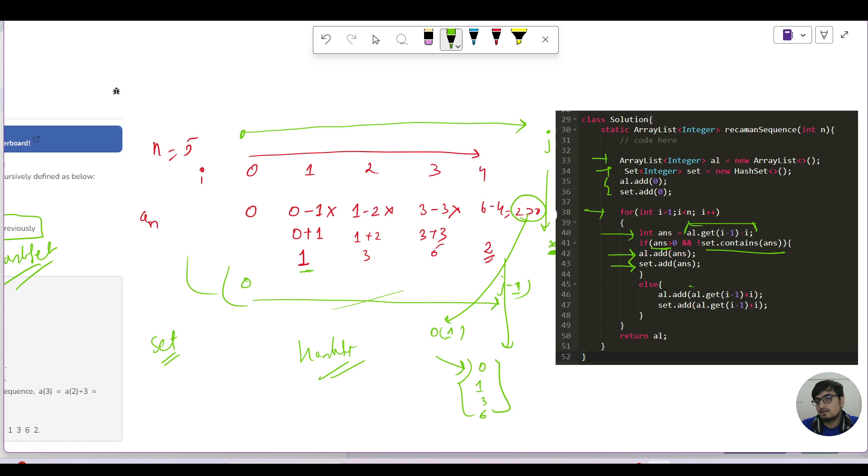Now in the else condition, our current answer will be al.get(i-1) plus i instead of minus i, and we will add it in our ArrayList as well as the set. At last, we'll just return the ArrayList.